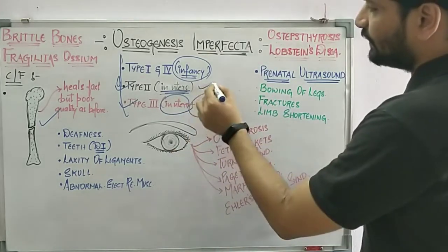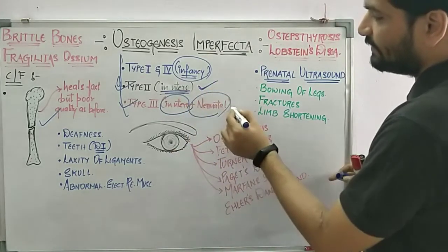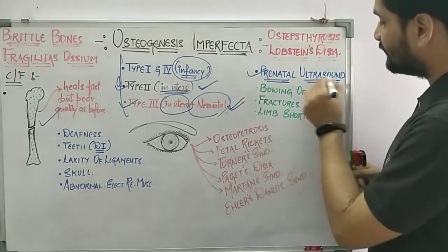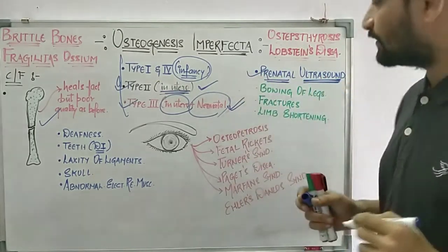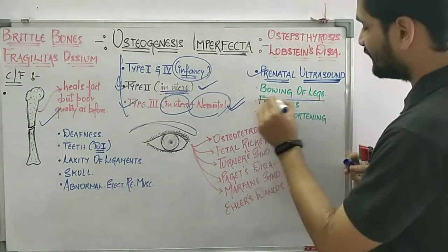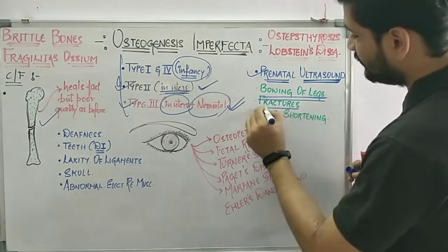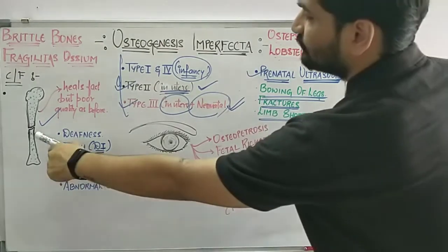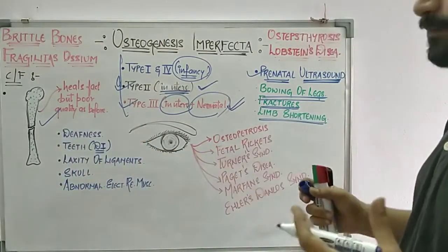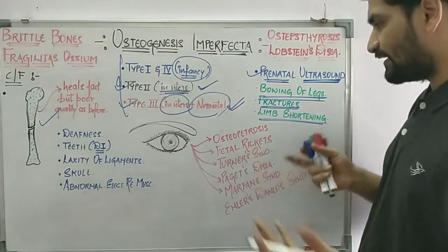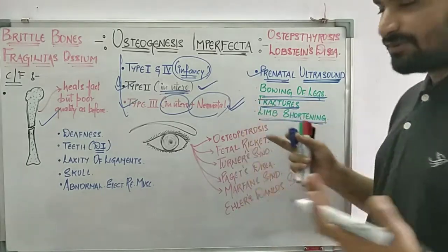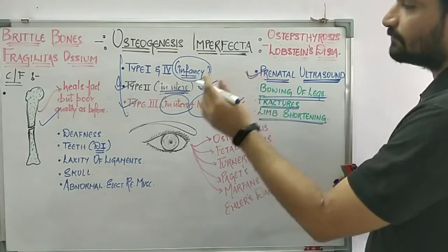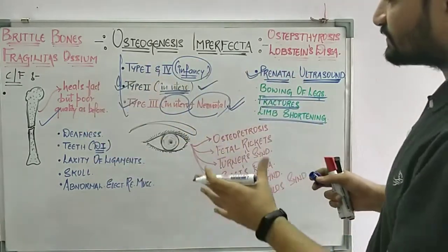In cases of type 2 and type 3 OI, a prenatal ultrasound of the mother will show the child's bowing of legs, fractures, and limb shortening. Due to the fragility and porosity of bone, bowing of legs, fractures, and limb shortening are the main bone-related clinical features observed.